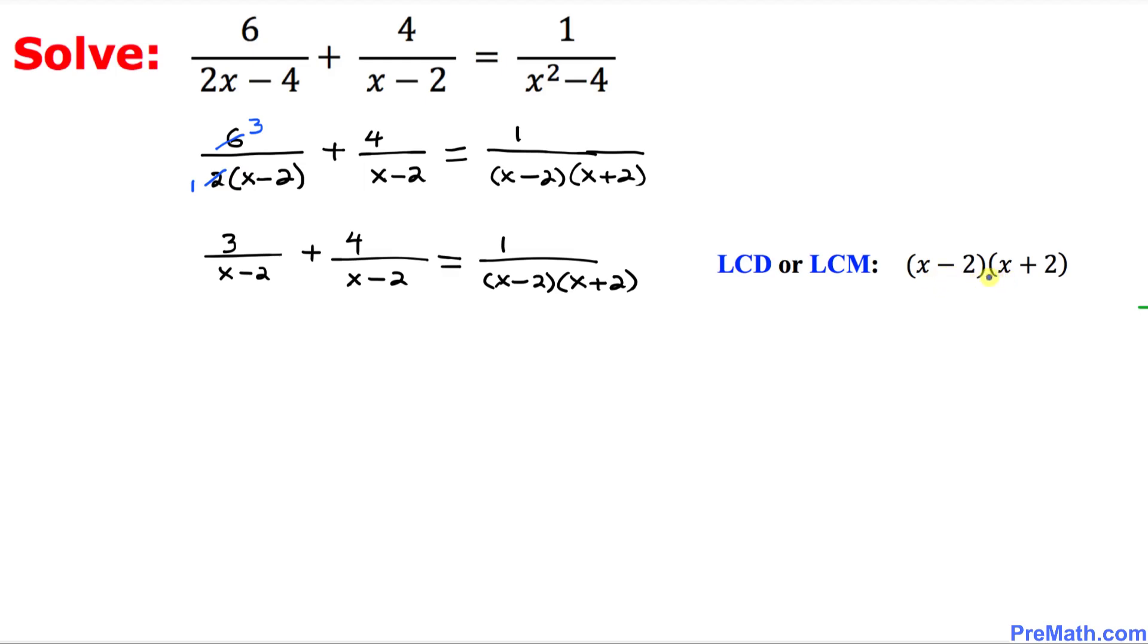Now we are going to multiply this least common denominator across the board with this equation. I am going to multiply x minus 2 times x plus 2 with the first fraction. Likewise, x minus 2 times x plus 2. And finally, x minus 2 times x plus 2 across the board.